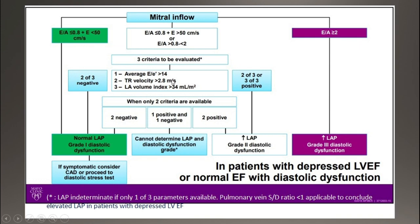If TR is absent — which is the case for many patients — we check the other two parameters. If both are positive, the patient has diastolic dysfunction type 2. If both are negative, the patient has type 1. If one is positive and one is negative, we check additional parameters, the most important being the S to D ratio. If S is less than D, the patient has high left atrial pressure and falls into grade 2.